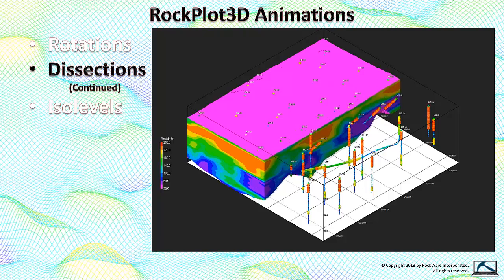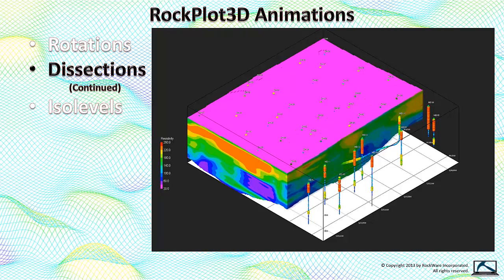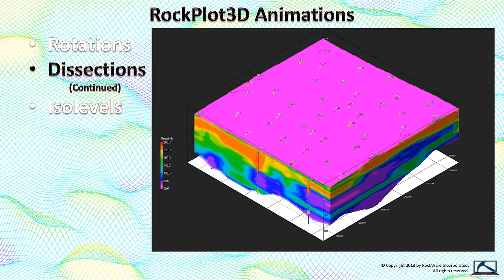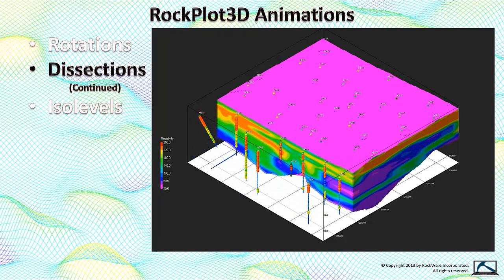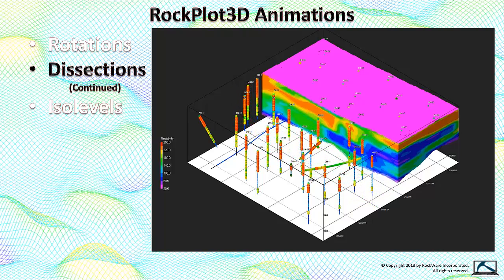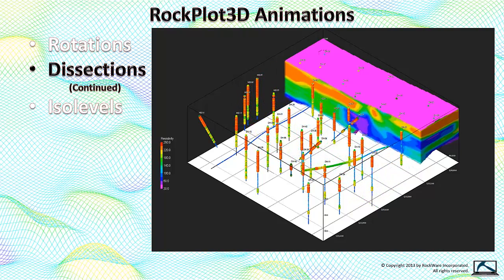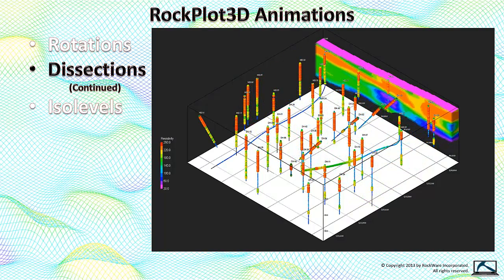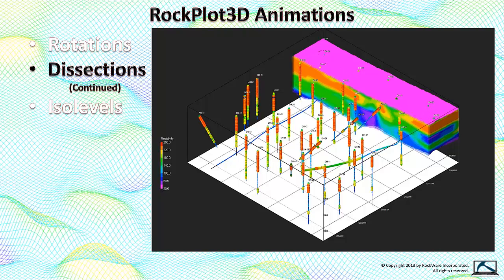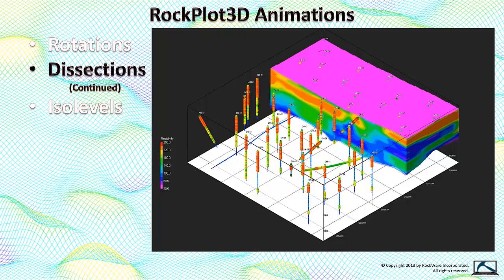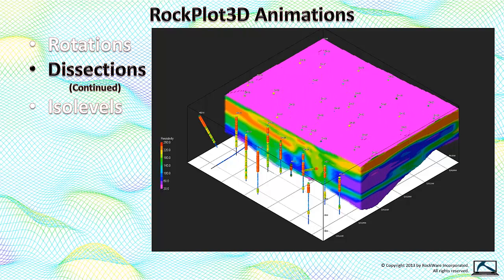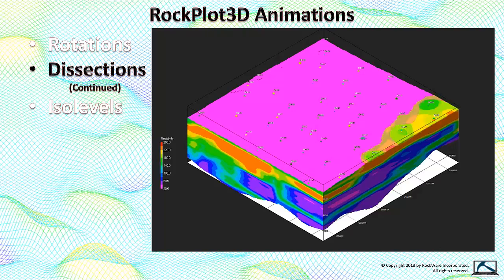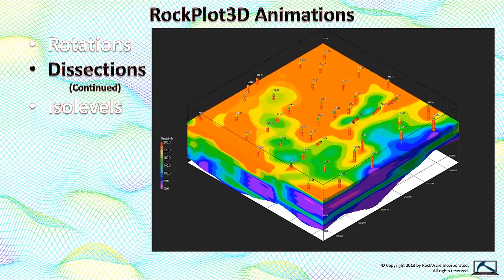If you're willing to stare at one of these long enough, you'll walk away with an intuitive spatial understanding, or nausea. This particular model represents resistivity variations within a sedimentary environment. Think of this as a 3D MRI of the subsurface.